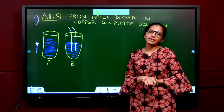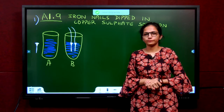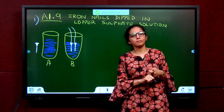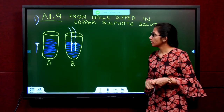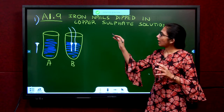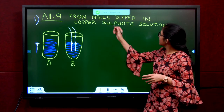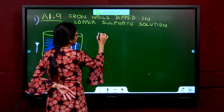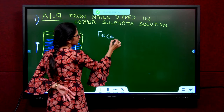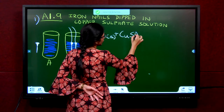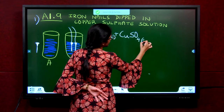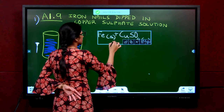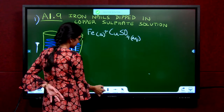Let us now study the first example on a displacement reaction. In the displacement activity series, note one thing: iron is more reactive than copper. Activity 1.9 — iron nails are dipped in copper sulphate solution. We are taking iron nails, which are solid, and dipping them in copper sulphate solution. Solution means you always write it in aqueous state. Let us understand what is happening.